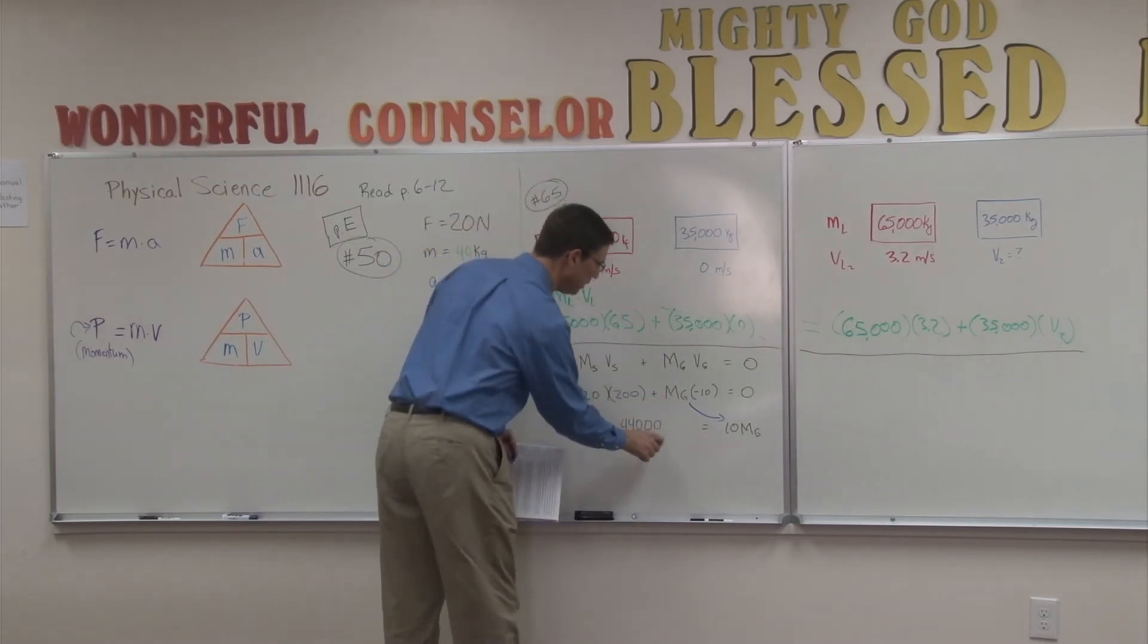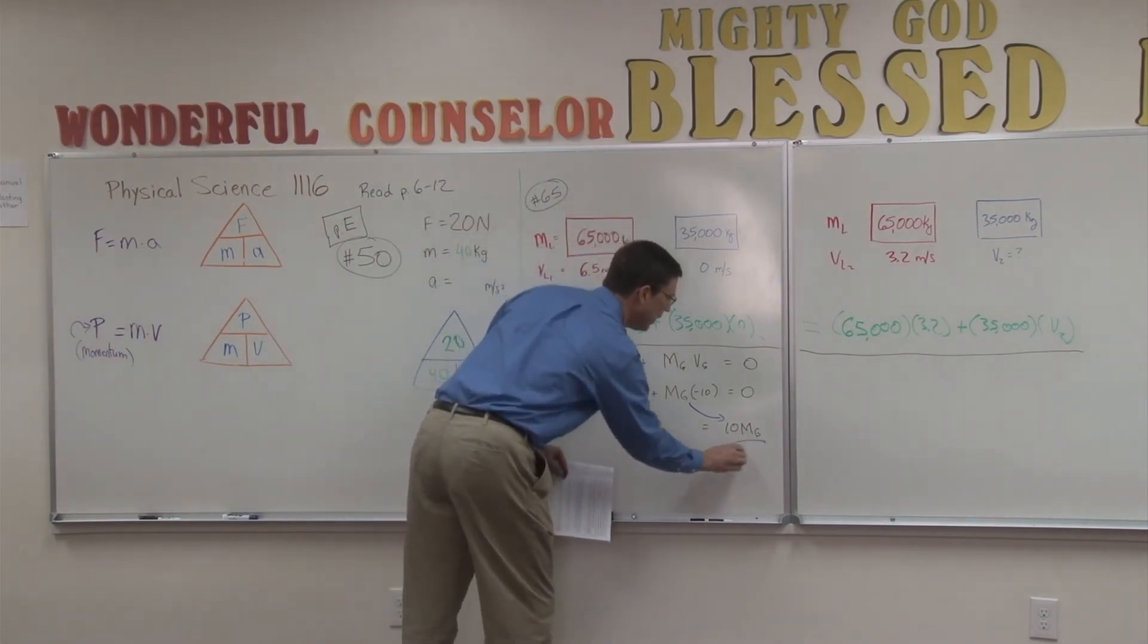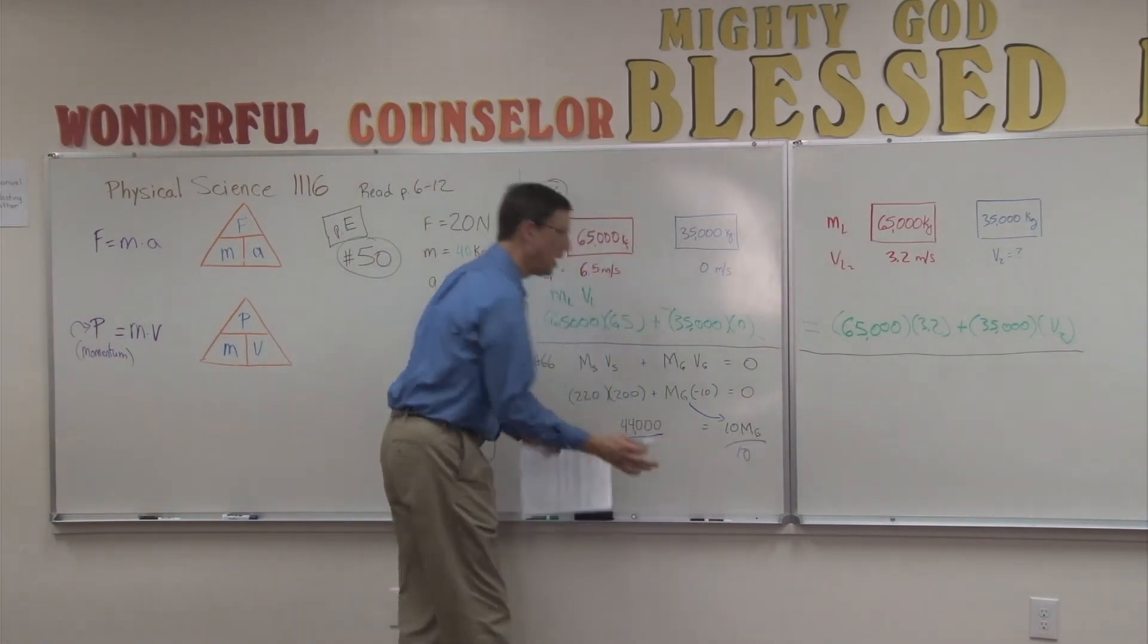And then the last step, and you know this from pre-algebra, is you just divide both sides by 10, and you're done.